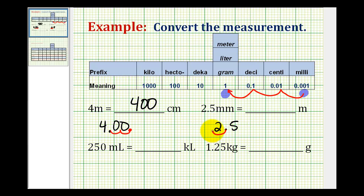So we'd have one, two, three. We'd have to add a couple zeros here. So 2.5 millimeters is equal to 0.0025 meters.